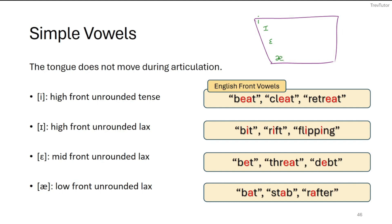In English, all of our front vowels are unrounded — we do not have any rounded front vowels. The high front unrounded tense vowel makes an /iː/ sound as in 'beat,' 'cleat,' or 'retreat.' The /ɪ/ is high front unrounded lax, as in 'bit,' 'rift,' or 'flipping.' The epsilon /ɛ/, our mid front unrounded lax vowel, is the sound in 'bet,' 'threat,' or 'debt.'